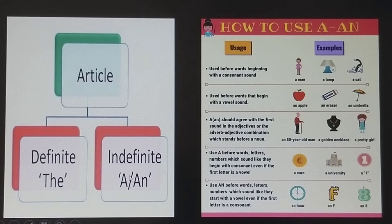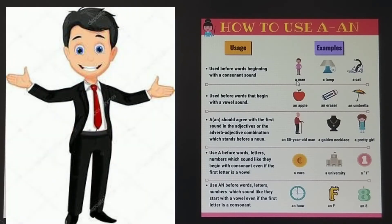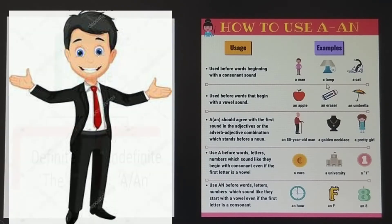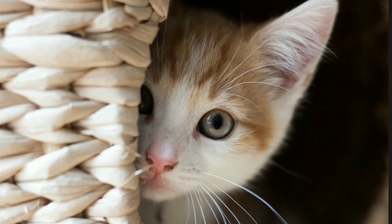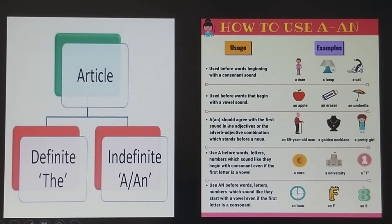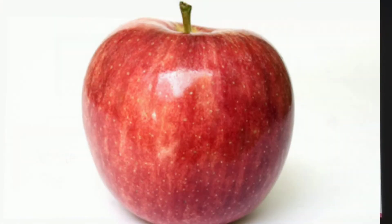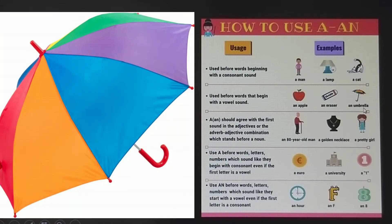Today we are going to discuss the indefinite article — how to use 'a' and 'an' with usage and examples. Use 'a' before words beginning with a consonant sound. M is a consonant sound, so: a man. L is a consonant sound: a lamp. A cat. When a consonant sound comes, the article 'a' comes in front of it. Use 'an' before words that begin with a vowel sound: an apple, an eraser, an umbrella.